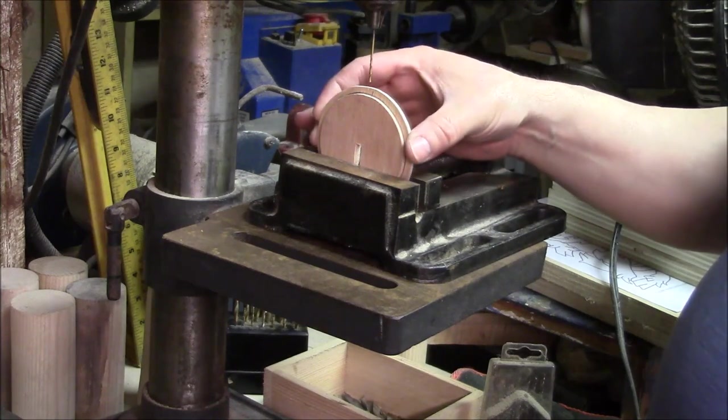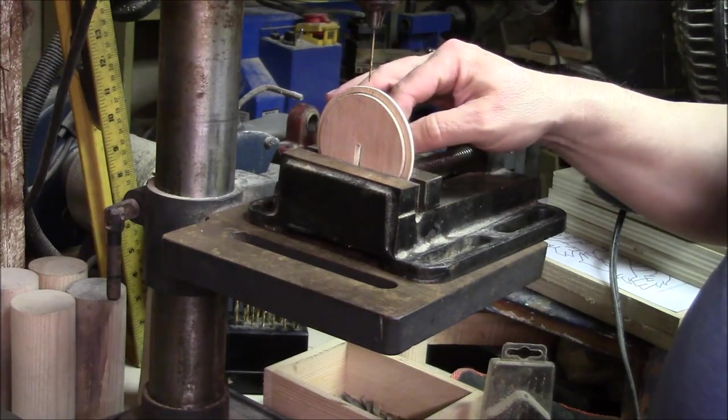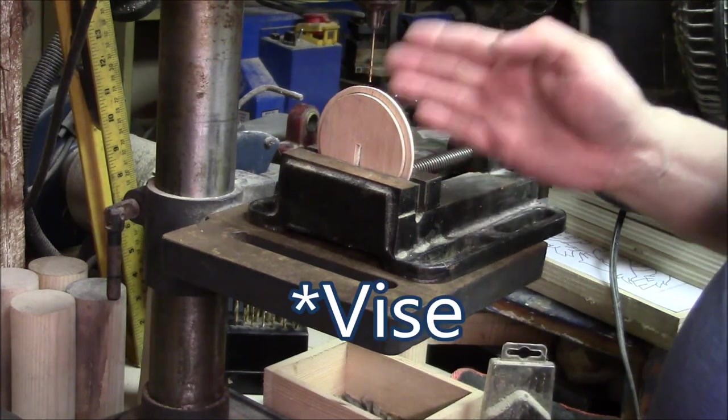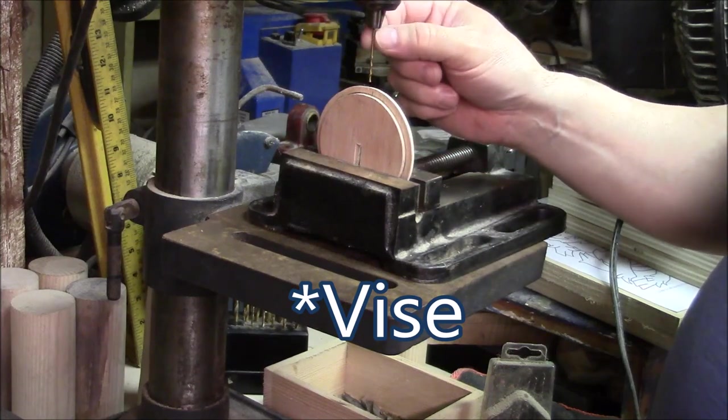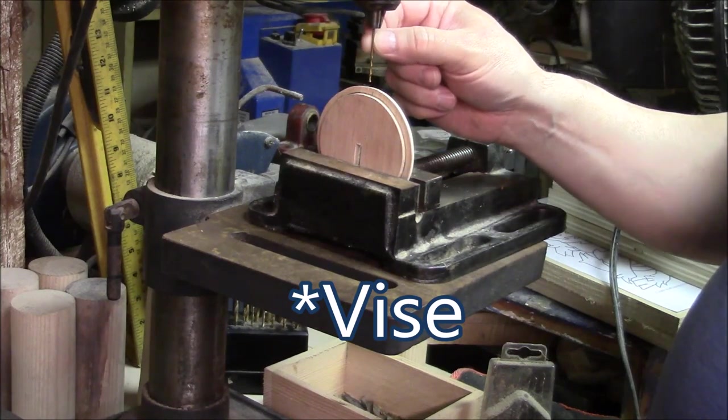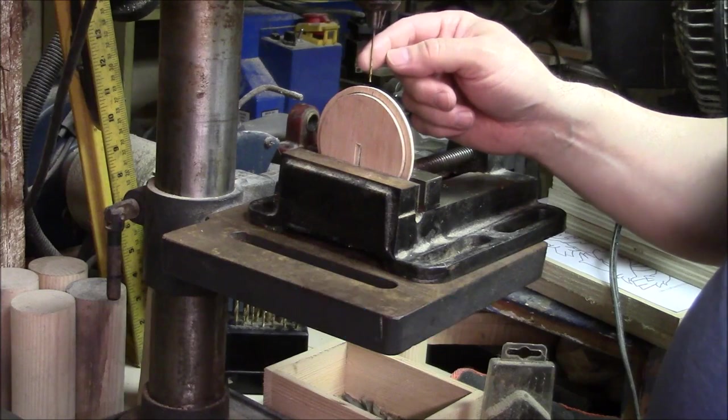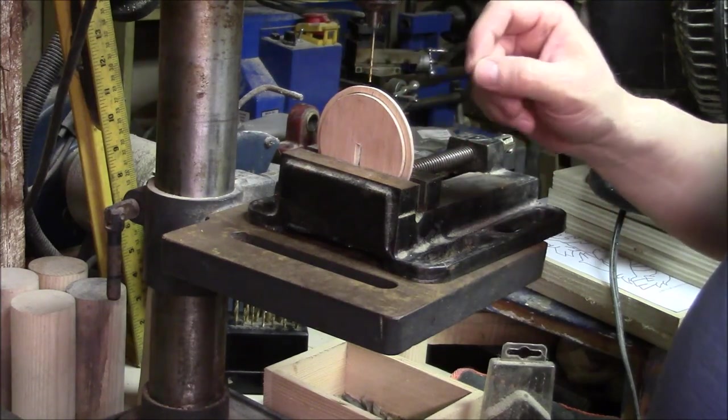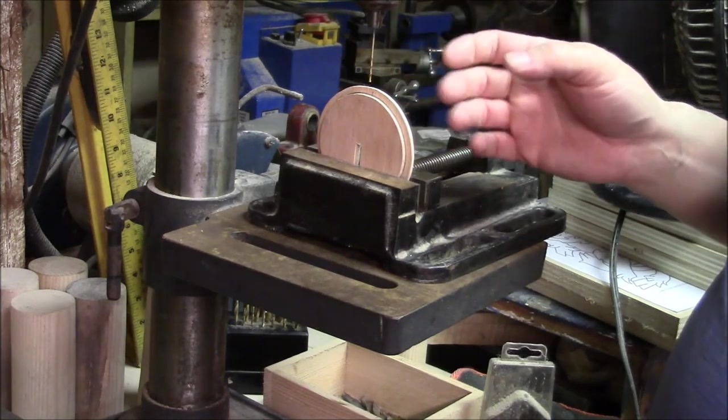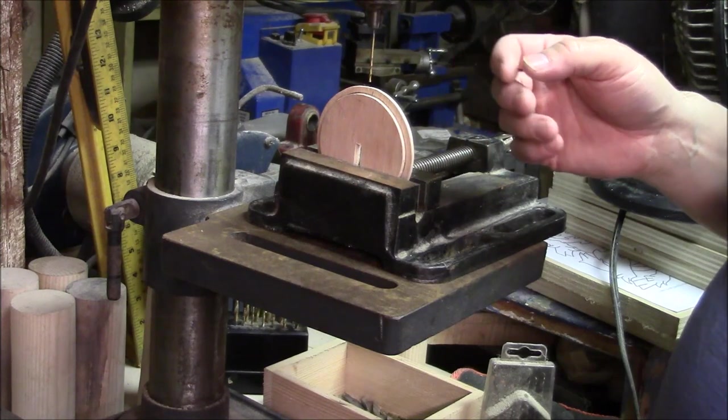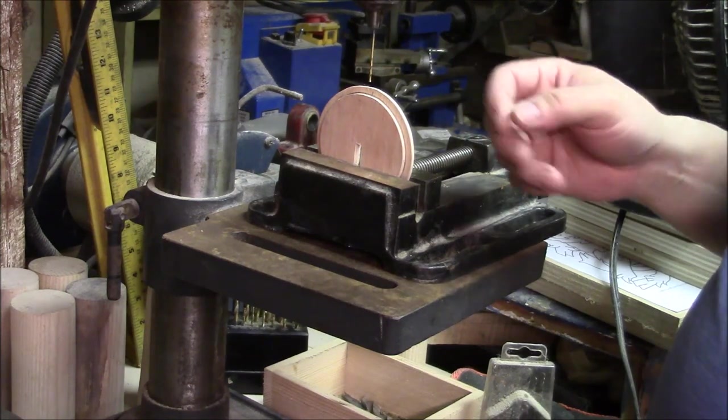So I've mounted the disc in my drill press chuck because I want it straight up and down. And I've chucked up the smallest drill that I have. That's a 1 16th drill. And I'm going to drill a very shallow hole. I only want it to be about 3 32nds, maybe an eighth of an inch deep.